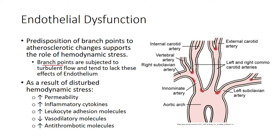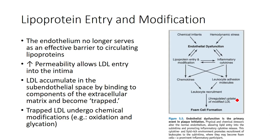When we have dysfunctional endothelium, there's increased permeability. Inflammatory cytokines attract monocytes, leukocyte adhesion molecules are recruited, and vasodilatory molecules are reduced. This process — endothelial dysfunction leading to inflammatory cytokine production, leukocyte adhesion, leukocyte recruitment, and foam cell progression — is key. The increased permeability allows LDLs to enter the intima, accumulate in the sub-endothelial space, get trapped, and set the stage for foam cell creation and eventually fatty streaks.